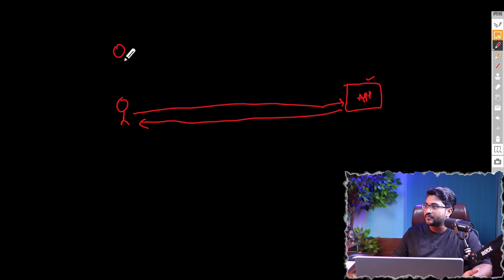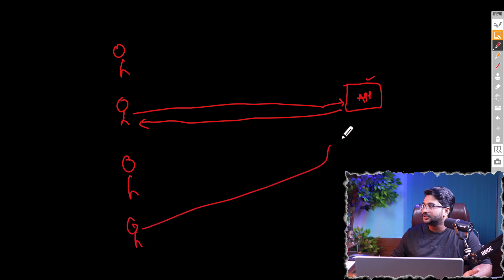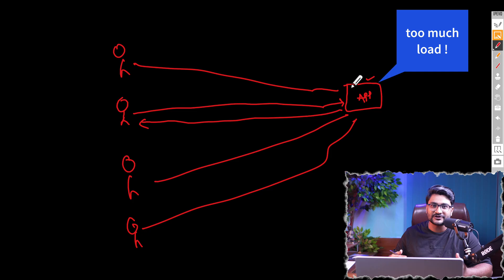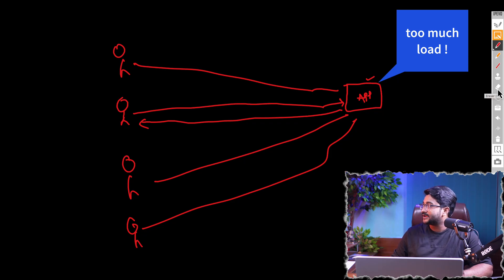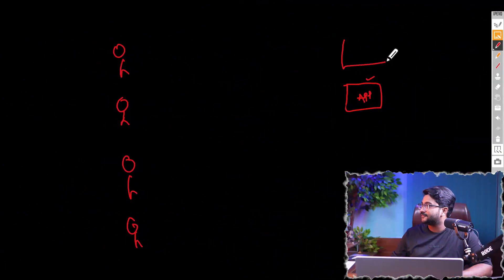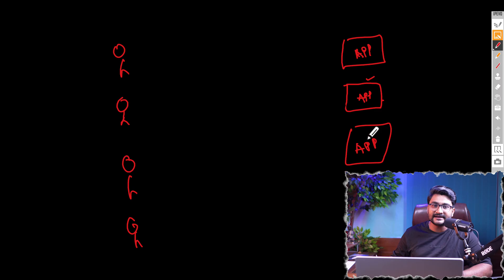Now imagine if you have many users all using your application. If all the requests go to the same application, that application's resources may be overused and it may struggle to give a response back. So to make sure the application doesn't have any bottlenecks, we can create different instances of that particular application — copies of the same app — so we can distribute the load between all instances.